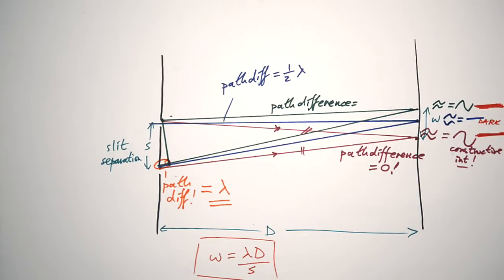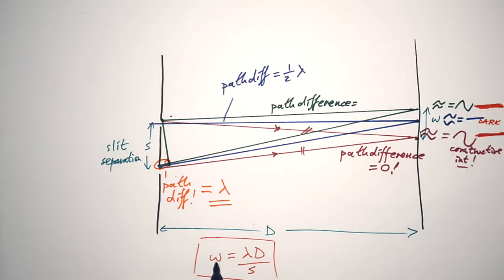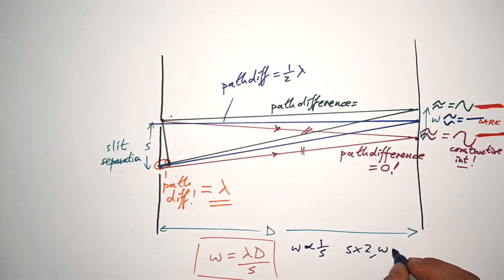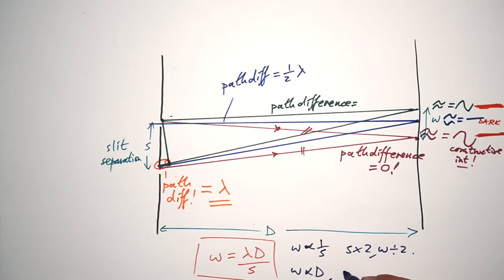When measuring experimentally, it's very difficult to measure just one fringe, so you measure at least 10 fringes using the dark fringes — because they're much easier to see — then divide by 10 to find the mean fringe width. Note that w is inversely proportional to s: if λ and D stay the same, doubling s halves w. Also, w is proportional to D: if λ and s stay the same, doubling D doubles the fringe width.